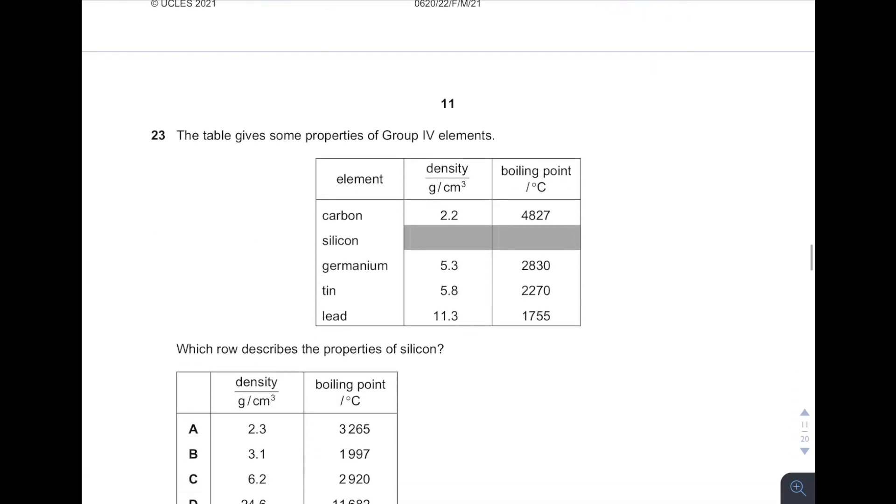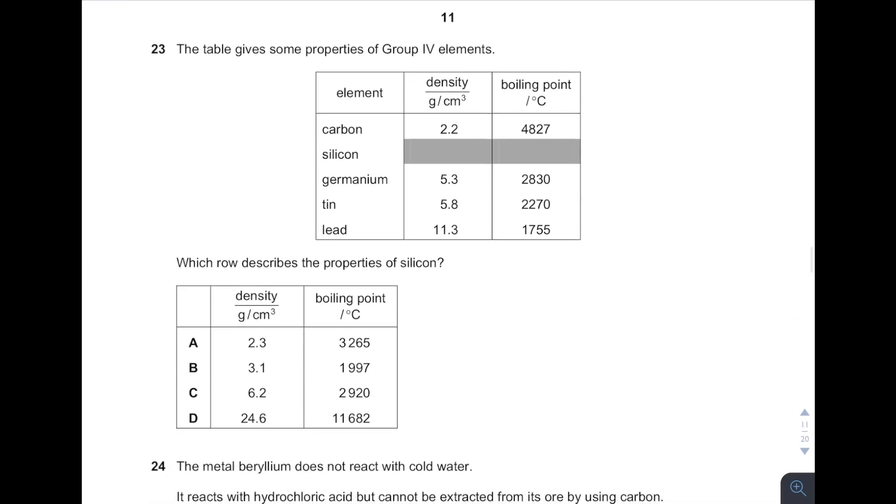Okay, then Q23. Which row describes the properties of silicon? As you can see, as it goes from the top towards the bottom, both the density and boiling point increase. From the table, you have to find the answer that can fit in between the properties of carbon and germanium. So very obvious, answer is A: 2.3, 3265.